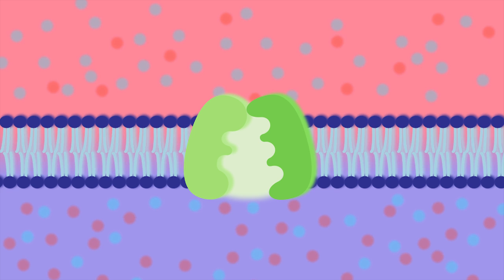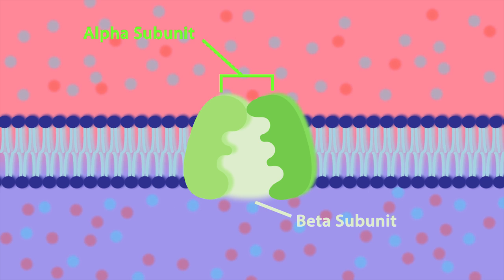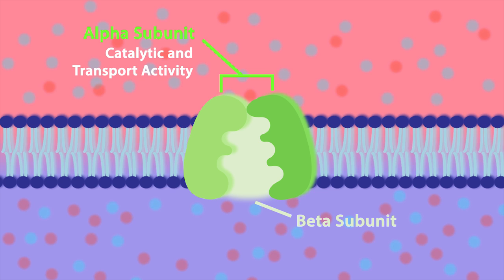The sodium-potassium ATPase consists of an alpha and beta subunit. The alpha subunit is responsible for the catalytic and transport activity, while the beta subunit is involved in the assembly and targeting of the pump to the proper membrane.